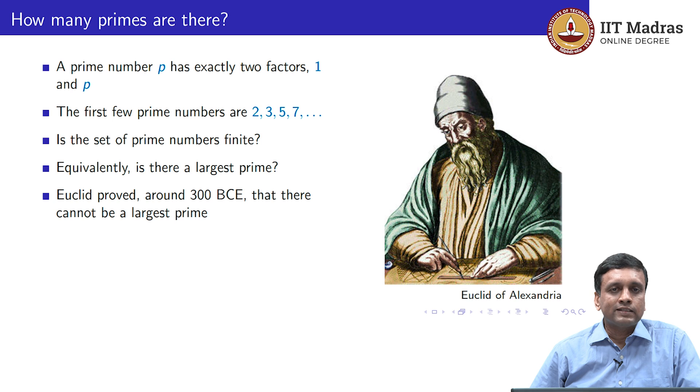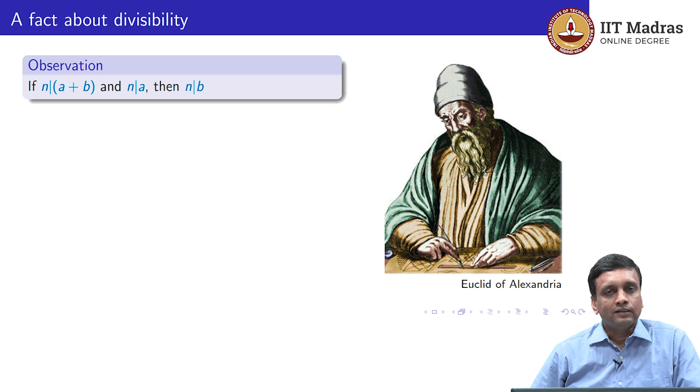What we are going to see is a version of a proof that goes back to Euclid from about 300 BCE, which shows that there cannot be a largest prime. And as we argued, if there is no largest prime, then it must be that the set of primes is actually an infinite set. To go ahead with this, we need a basic fact about divisibility.